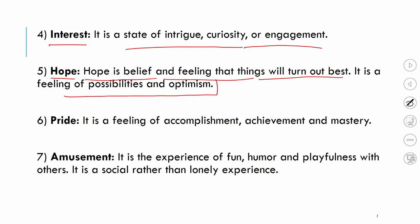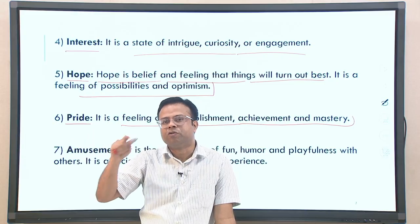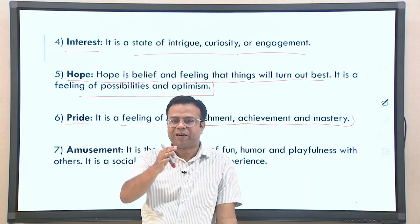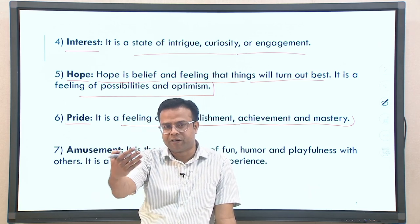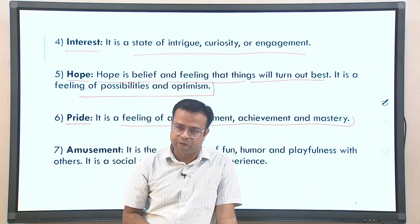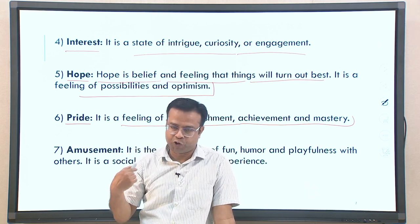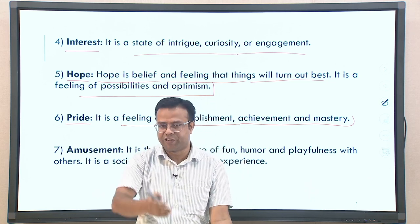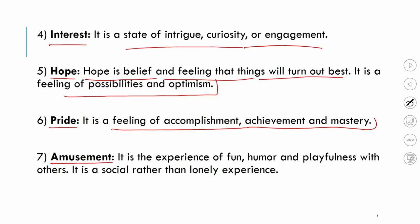The sixth positive emotion is pride, which we have already discussed under self-evaluating emotions. Pride is generally a feeling of accomplishment, achievement, and mastery. The moment we accomplish or achieve something, there is a positive evaluation associated with it. We also discussed that pride can have a negative aspect called hubris, associated with arrogance and egoism, but here we refer to the natural, positive sense of pride.